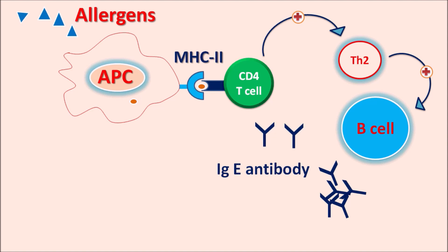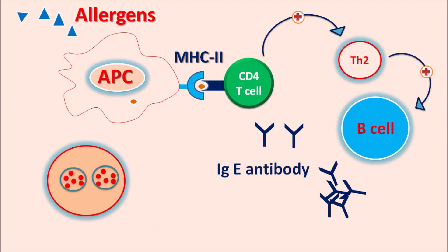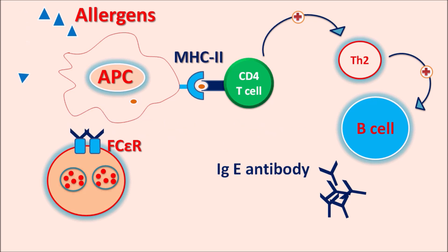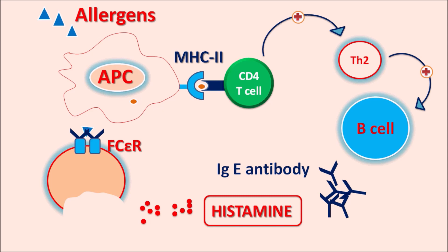These IgE antibodies then act on mast cells as well as basophils. On these mast cells, receptors for IgE antibodies are expressed — FcεRI. The IgE antibodies bind to these sites, and in the presence of allergens these mast cells undergo degranulation and release histamine. This histamine produces the allergic response which causes inflammation in the eye.